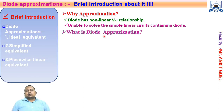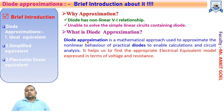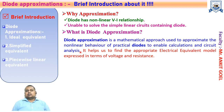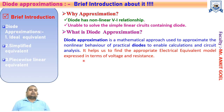What is diode approximation? Diode approximation is the mathematical approach to approximate the non-linear behavior of the practical diode to make our calculation easier and make the analysis of the circuit easier. We can easily find the voltage and current across the diode when we use the diode approximation model. Our target is to find the electrical equivalent model which will depict the same behavior of the diode in terms of voltage and resistance.